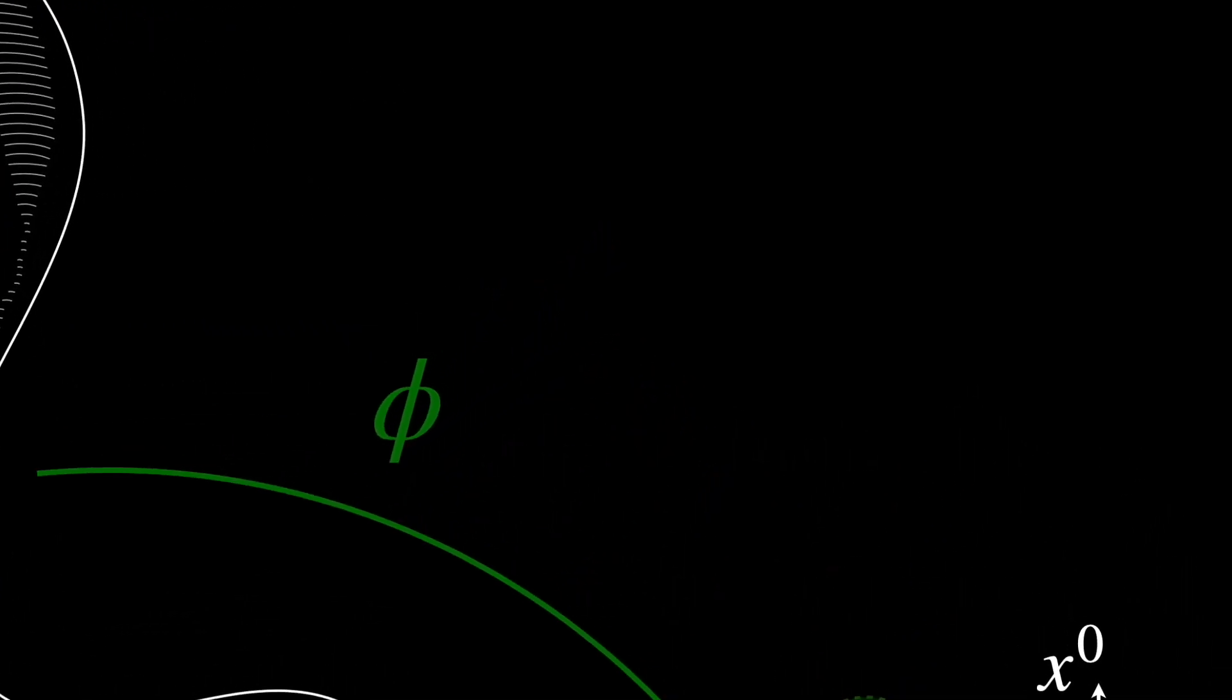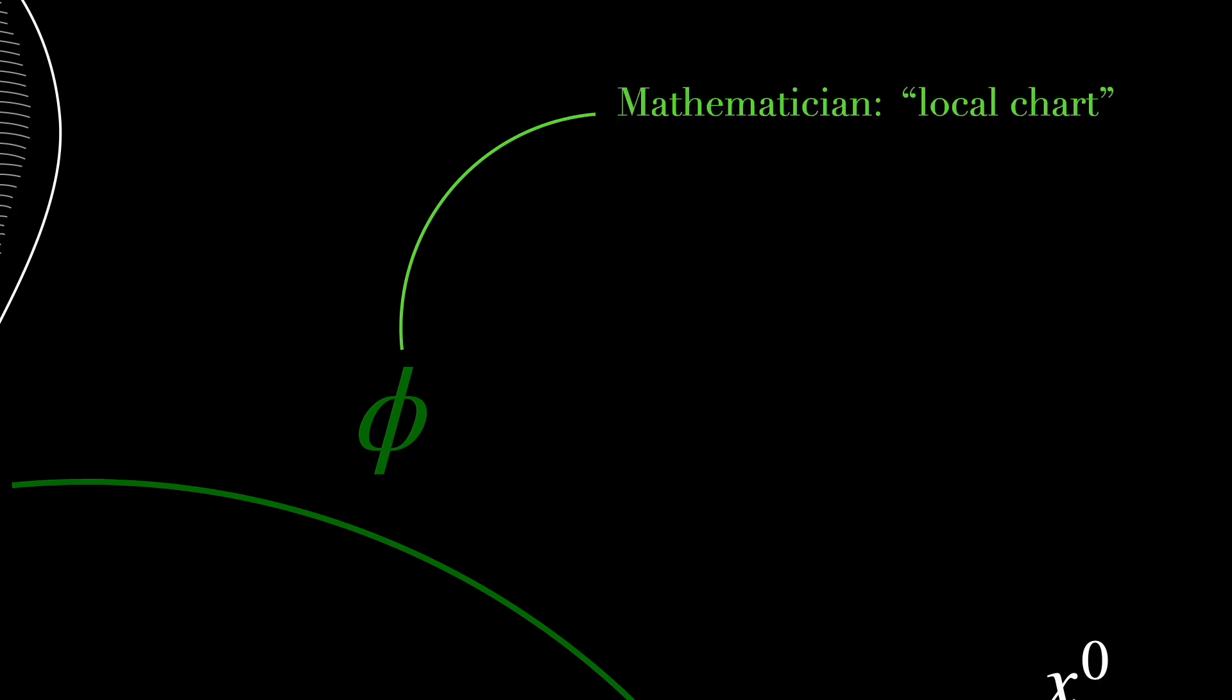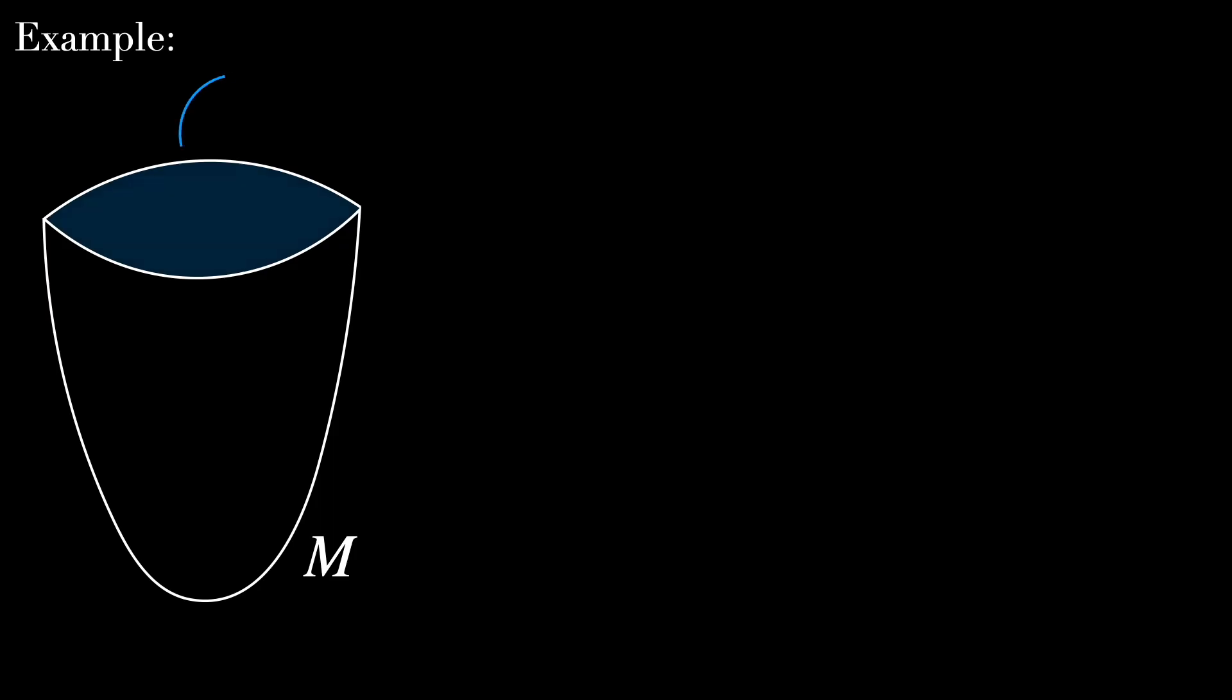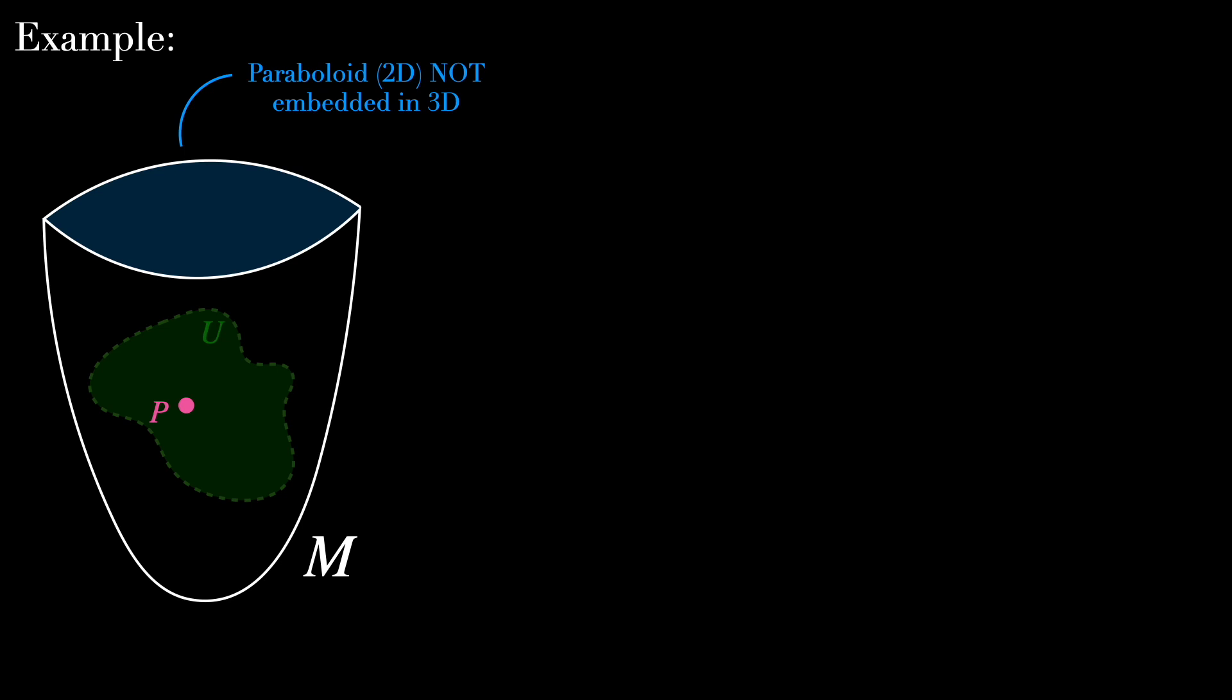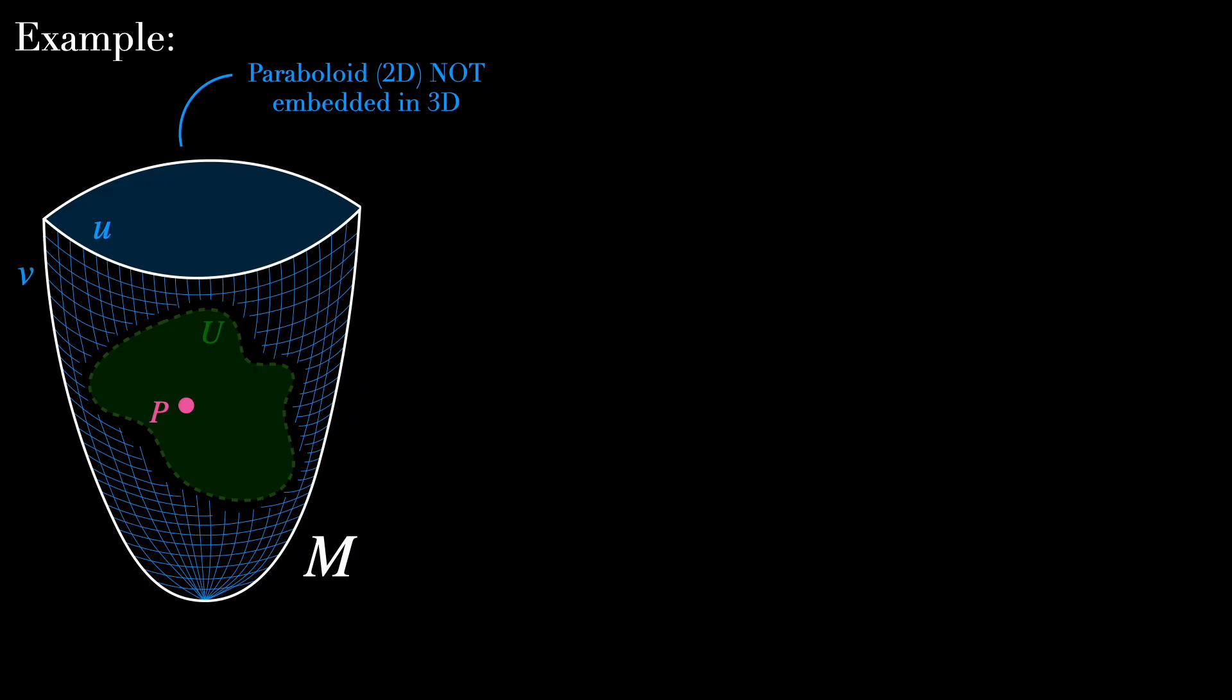Another important remark is that the mapping phi from the neighborhood U in M to Rn is called the local chart by mathematicians, and coordinate system by physicists. Let's see a concrete example now. We have an abstract 2D manifold M, which is paraboloid shaped, but it's not embedded in R3. Pick a point P in M and let U be a small neighborhood of P. This neighborhood U allows us to work locally on M. We cannot use the traditional X, Y, Z coordinates of Euclidean space. Instead, we'll describe it using intrinsic coordinates UV.